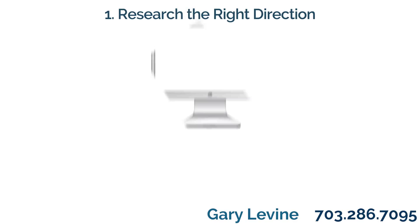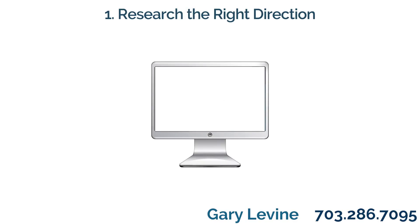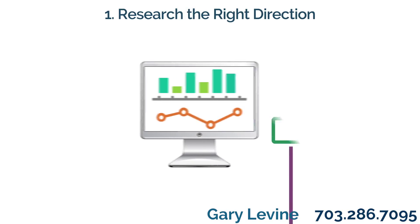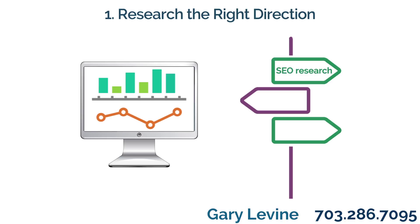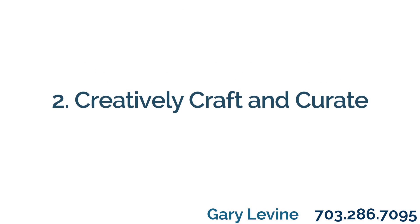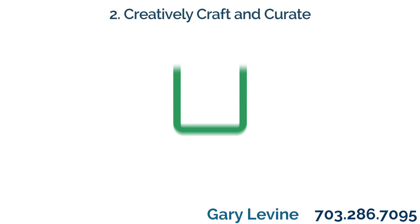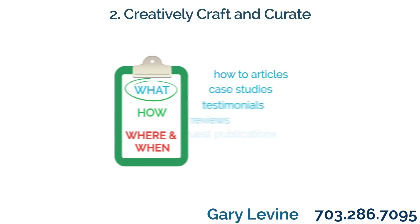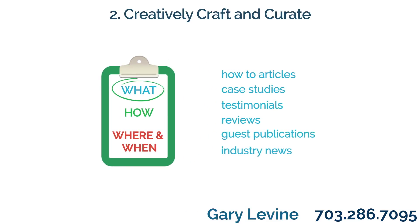One: Research the right direction. Researching your market is the starting point for an effective marketing plan. An understanding of key search statistics as well as conducting competitor analysis will help you set off in the right direction. Once you know what search terms to target, you can confidently address and curate the type of topics and content formats that will attract your target audience.